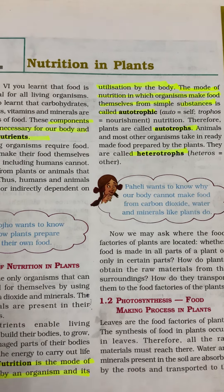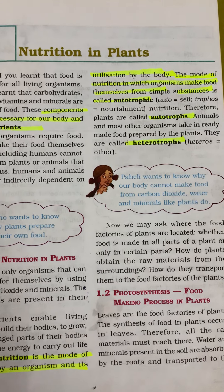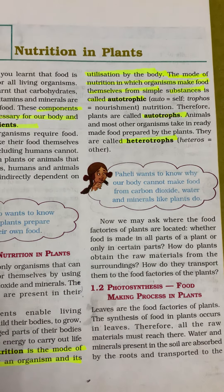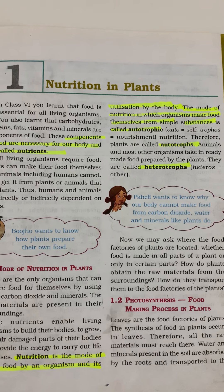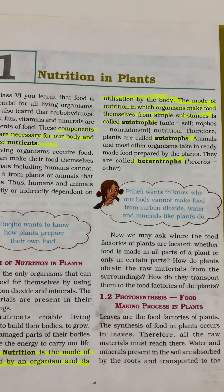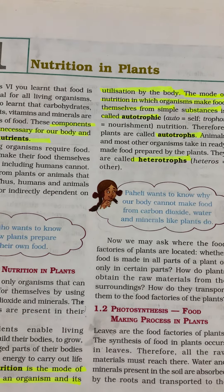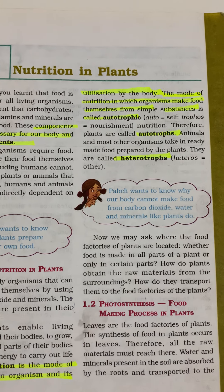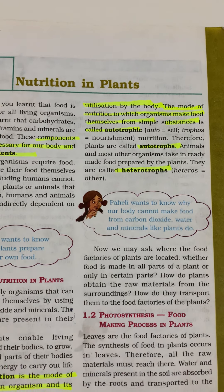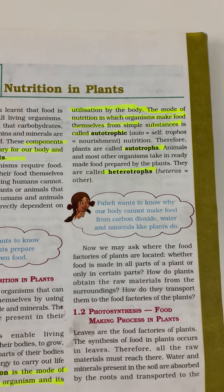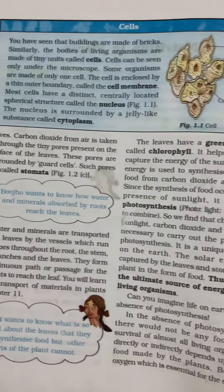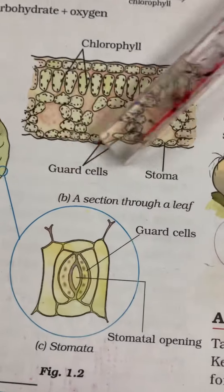Autotrophs have self-nutrition. Plants are the only living things which can make their own food by themselves. Plants take water and minerals from the soil and carbon dioxide from the air, and they form carbohydrates.